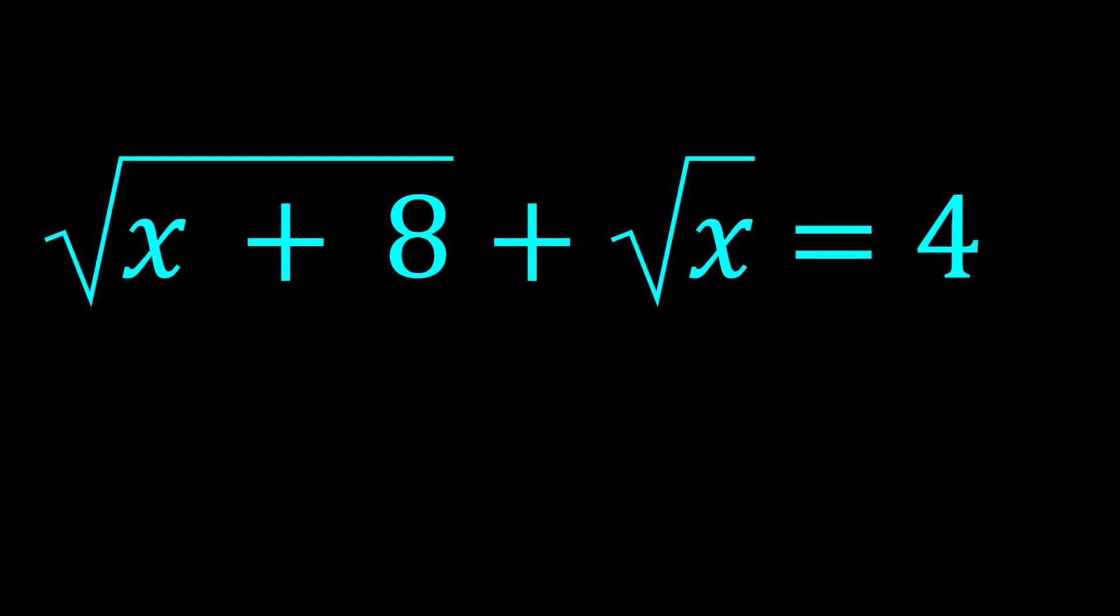Hello everyone. In this video we're going to be solving a radical equation. We have square root of x plus 8 plus the square root of x equals 4, and we're going to be solving for x values. We're looking for real and complex solutions. I'll be presenting two methods. If there's another method, please let me know in the comment section down below. Let's get started with the first one.